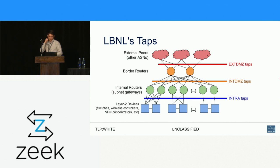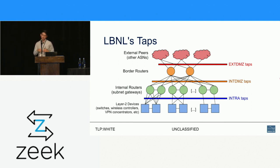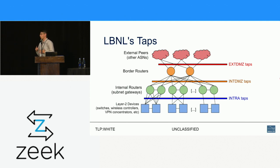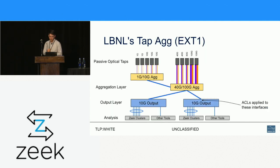What does this look like in reality? This is a cartoonized version of our network. We've got external peers at the top connecting to our border routers — between those we have what we call our external DMZ taps. Between our border routers and internal routers or subnet gateways, we have a layer called our internal DMZ. Downstream of our internal routers we have Layer 2 devices — switches, wireless controllers, VPN concentrators — with a tap layer between those we call our intra-taps, looking at traffic within our network.